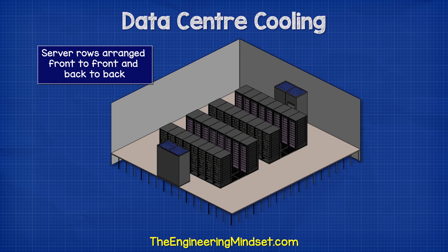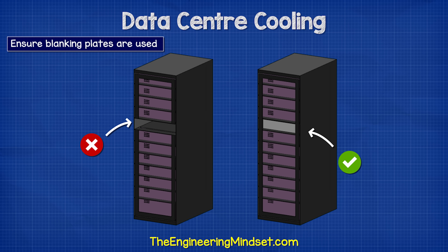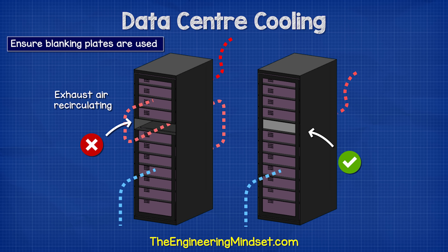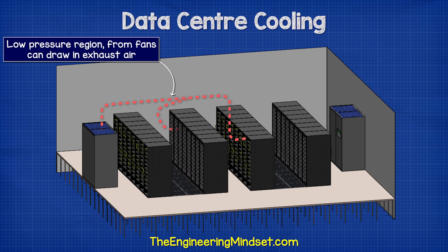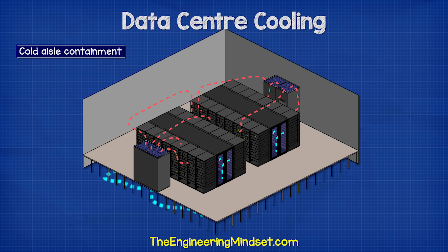Instead, we arrange the rows so that they are facing front to front and back to back. This way, we only provide cold air to the front of the servers and the hot exhaust isn't sucked into another server — creating hot and cold aisles. We need to ensure that empty spaces in the servers are filled with blanking plates to prevent warm exhaust air from recirculating. Additionally, the fans in the server racks cause a negative pressure region at the front of the server, which can draw warm exhaust air down and recirculate it back into the server. For existing data centers, one of the best designs is cold aisle containment, where the cold aisle is covered with a roof and the ends of the aisles are sealed with doors, putting a physical barrier between the aisles to prevent mixing and recirculation.